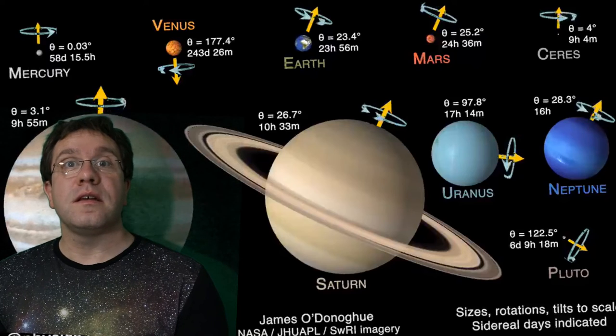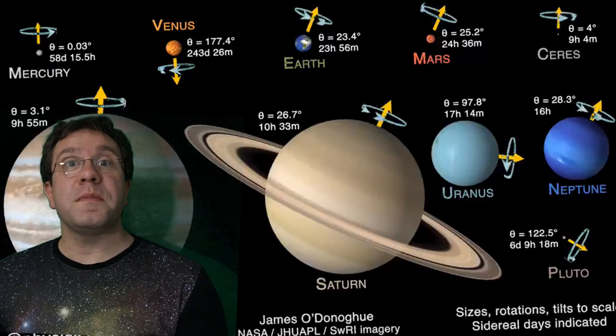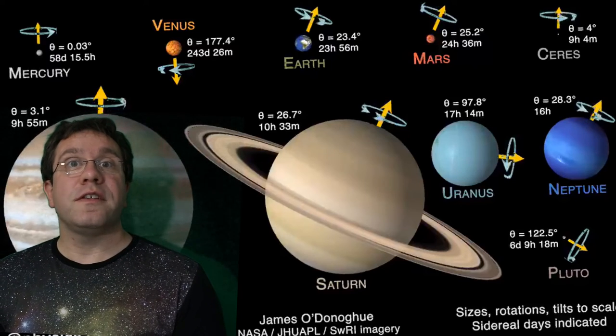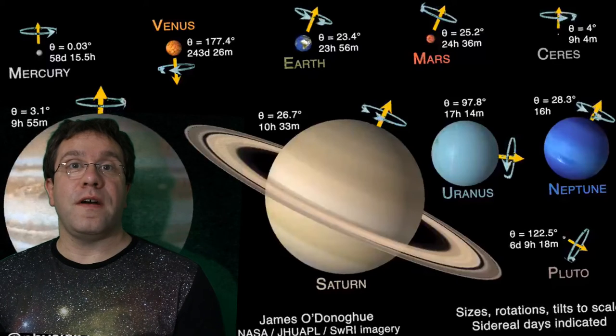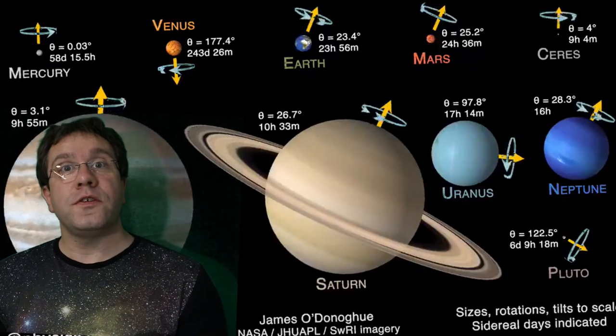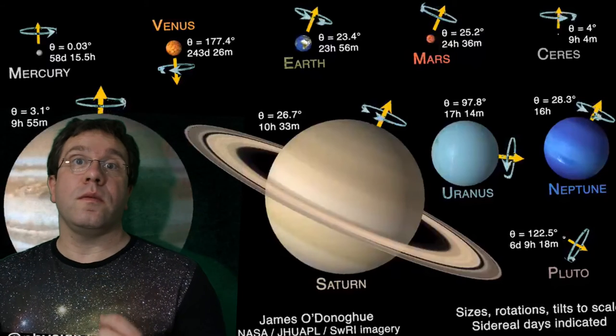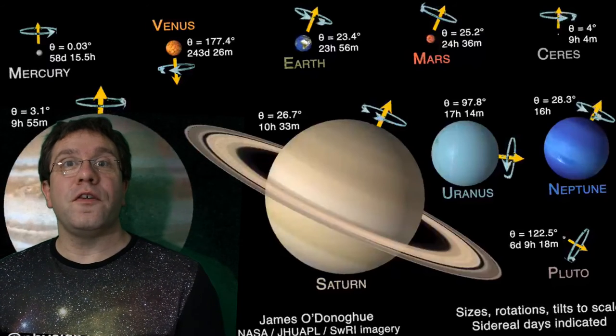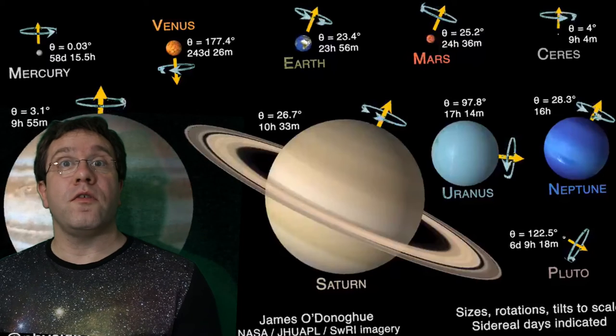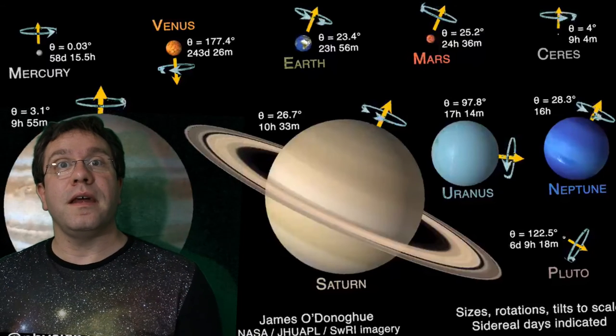The gas planets spin much quicker. Jupiter spins the fastest, rotating every 9 hours and 55 minutes. The weird thing with Jupiter is the rotation at the equator is slightly quicker than at the poles. This is called differential rotation, which means the rotation is different at different places on the planet.